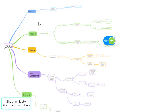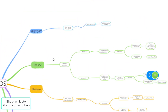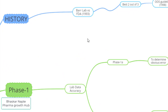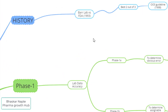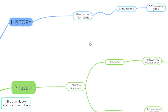Let us begin our talk with the very first point, that is history. In 1993, Barr Laboratories sued the US FDA for ad hoc drug regulations. The case was that US FDA was not accepting the practices followed by Barr Laboratories during the management or handling of out of specification results.